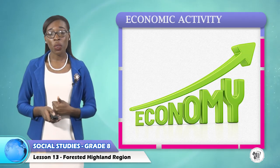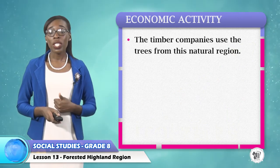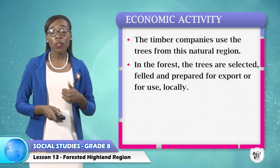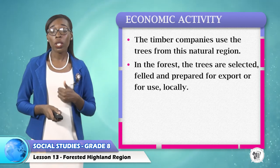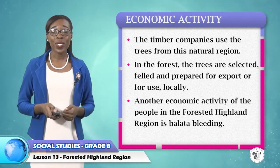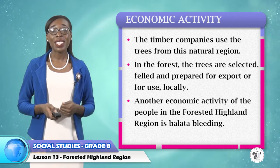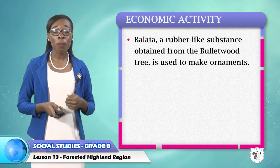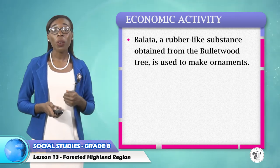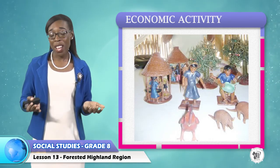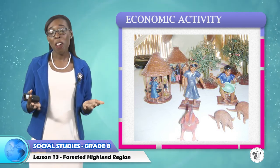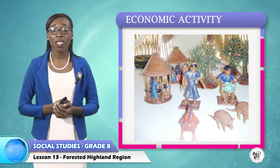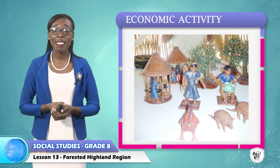Now let's move on to the economic activity of the forested Highland. The timber companies use the trees from this natural region. In the forest, the trees are selected, felled, and prepared for export or for use locally. Another economic activity of the people in the forested Highland region is balata bleeding. Balata, a rubber-like substance obtained from the balata wood tree, is used to make ornaments. You may have seen balata ornaments before, perhaps at the Heritage Month exhibition in Georgetown, or if you are from one of the interior regions located within the forested Highland.